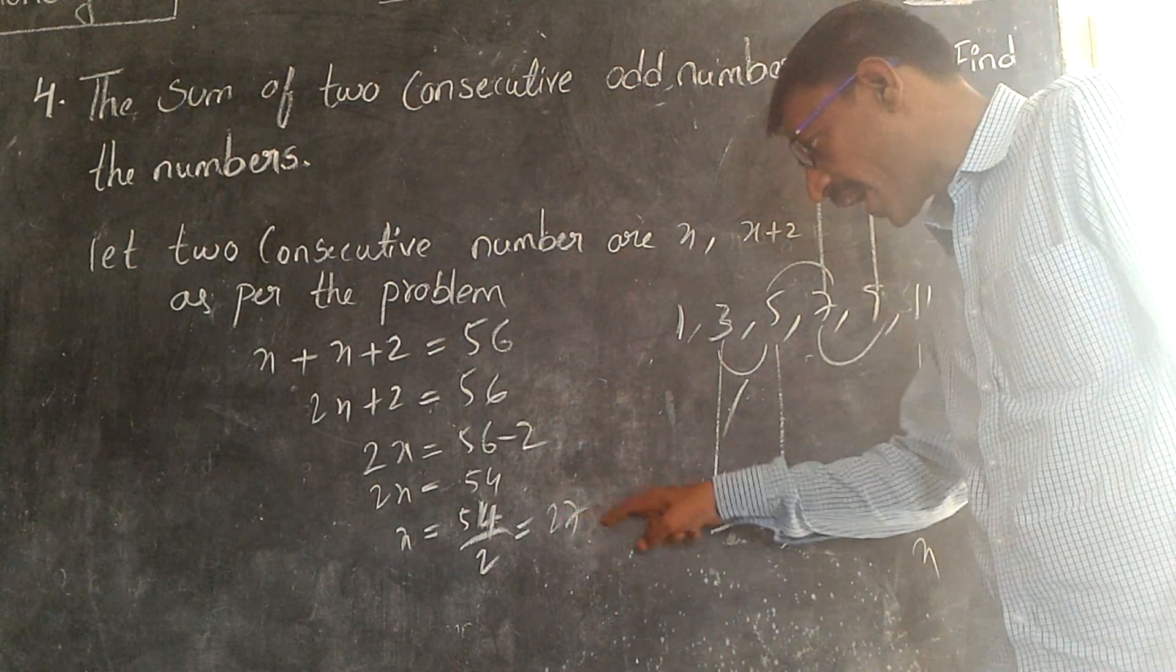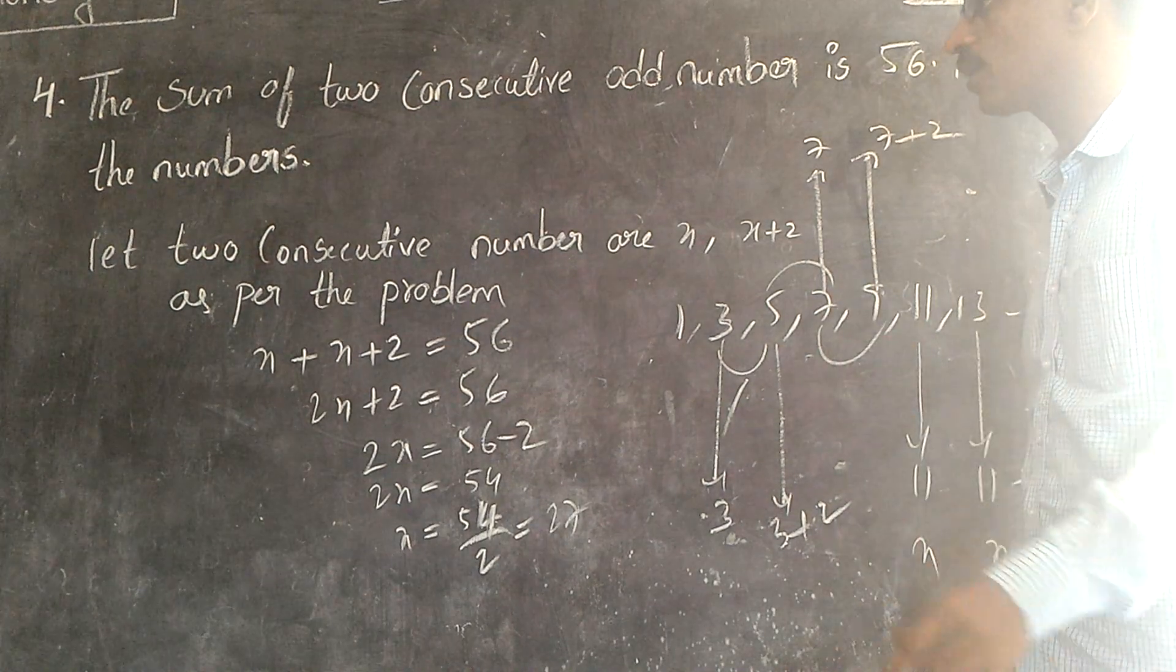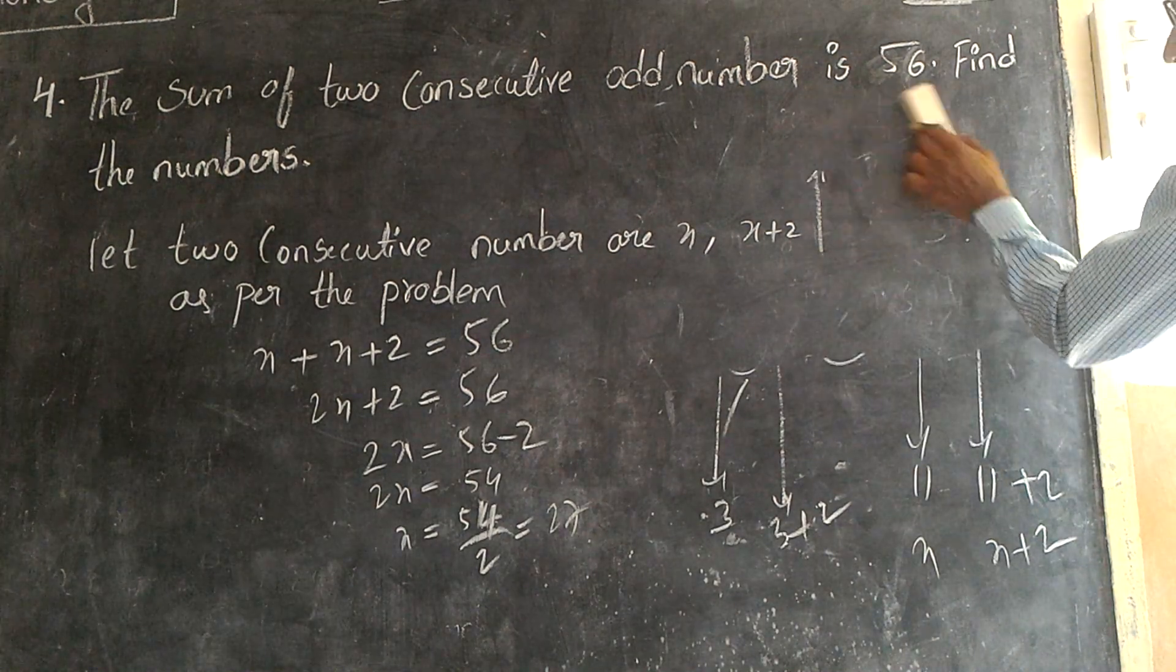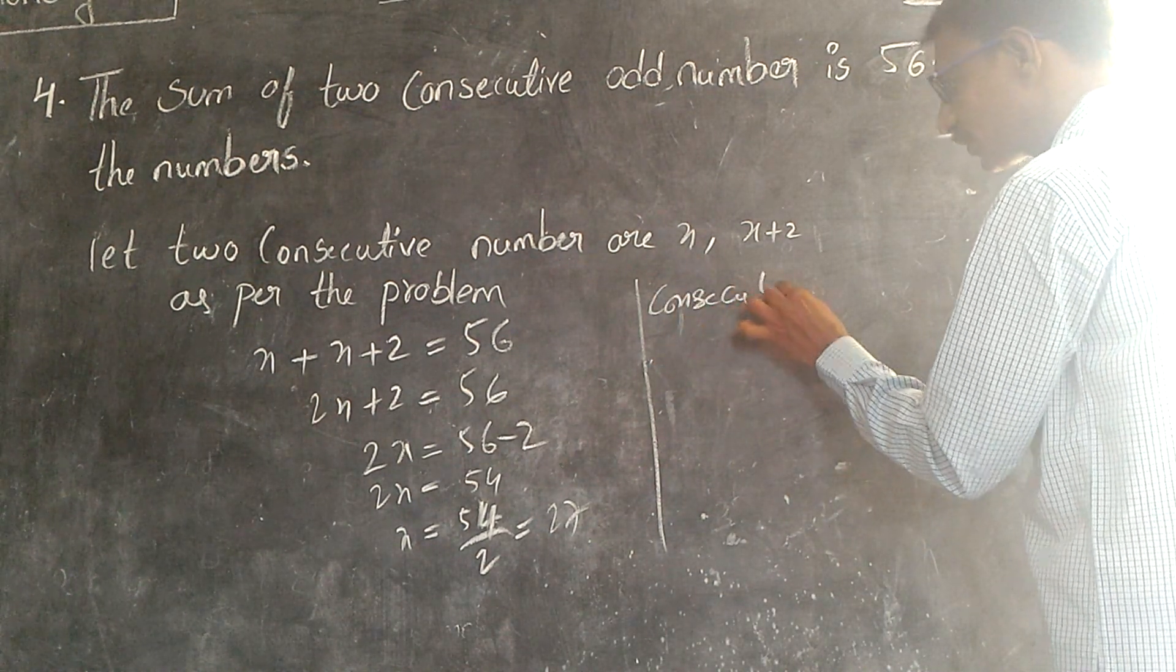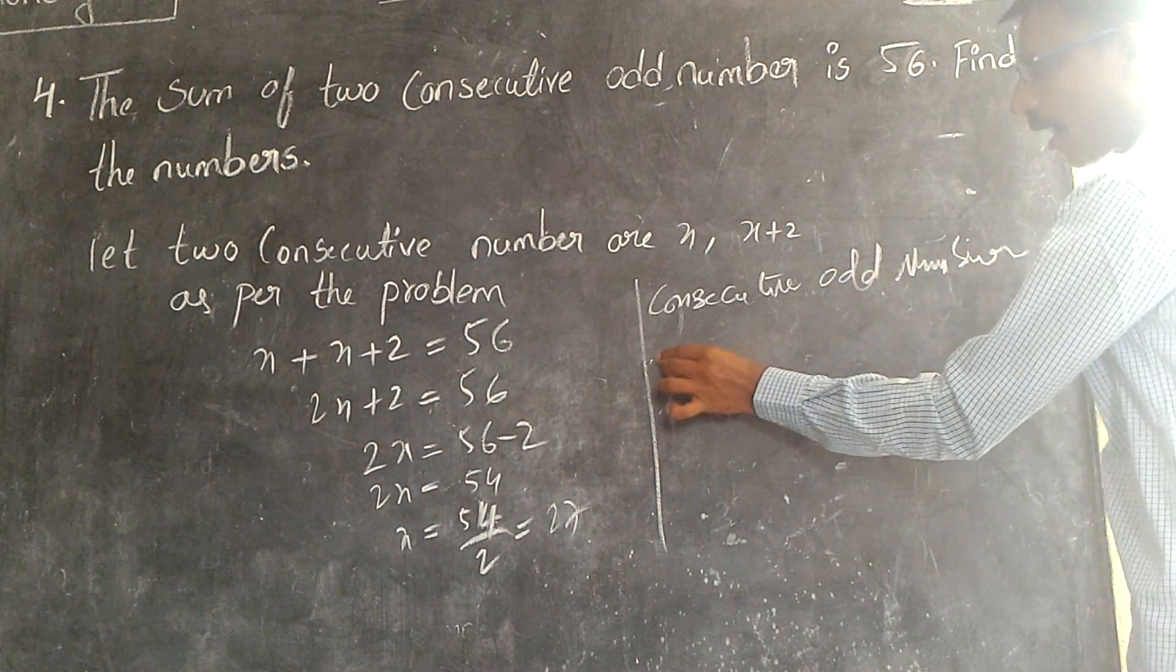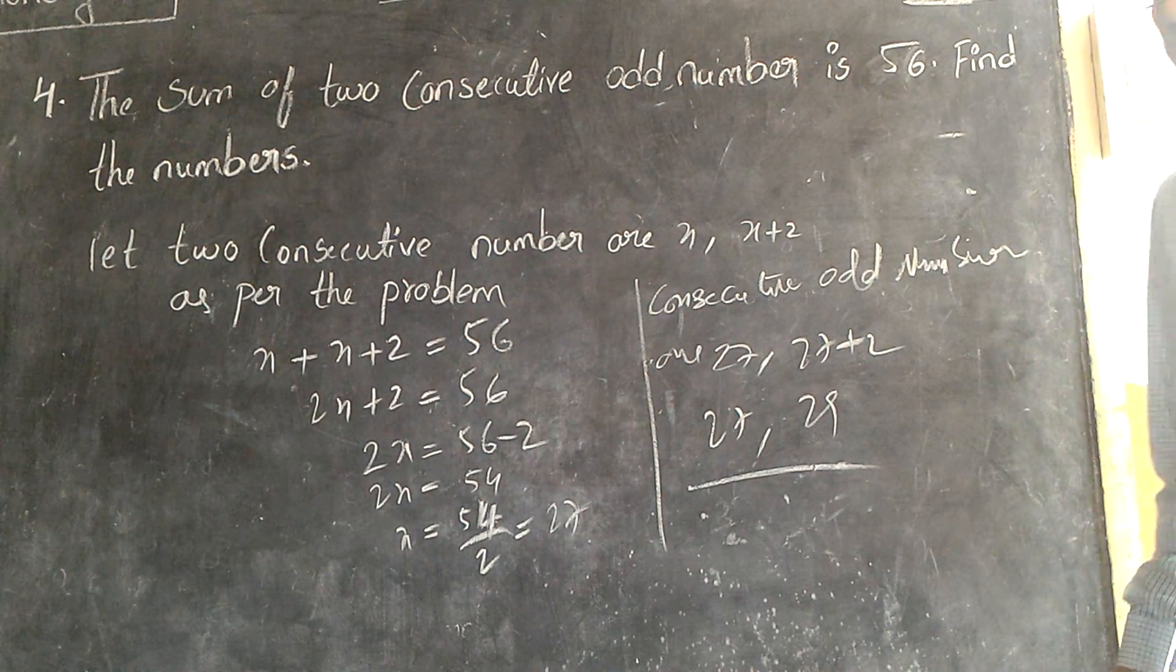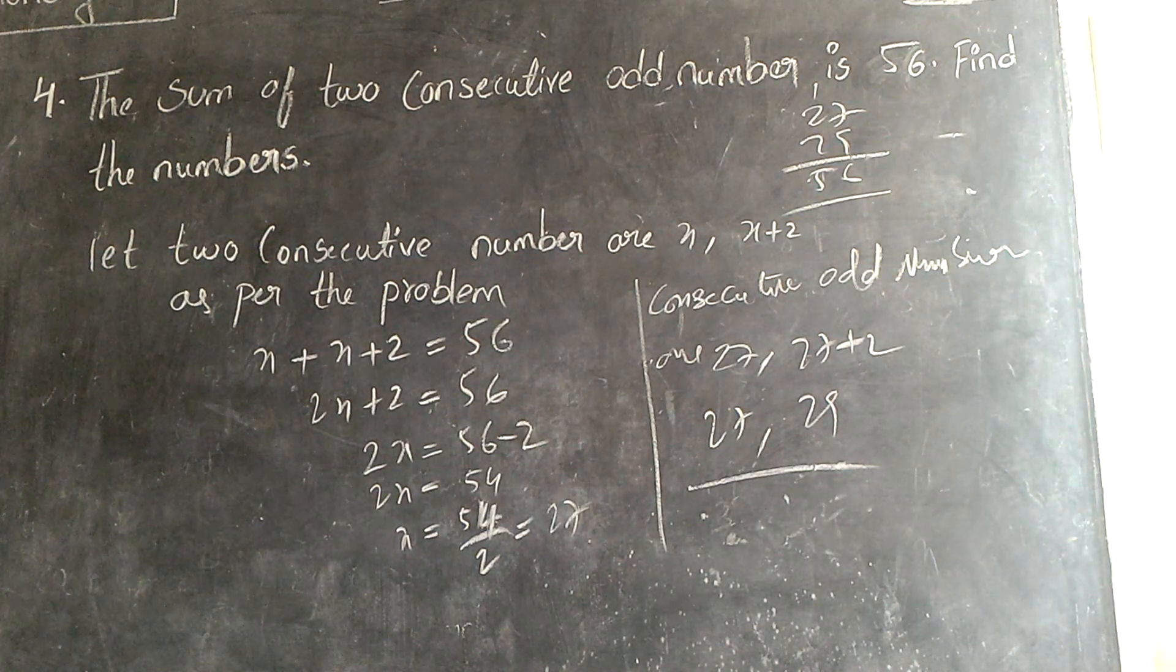Twenty-seven is odd number or not? Yes. By adding two we get odd number. By adding two to the twenty-seven we get twenty-nine. Twenty-seven and twenty-nine are our two consecutive odd numbers. The two consecutive odd numbers are twenty-seven and twenty-nine. By adding twenty-seven and twenty-nine how much? Fifty-six. Yes. Clear?